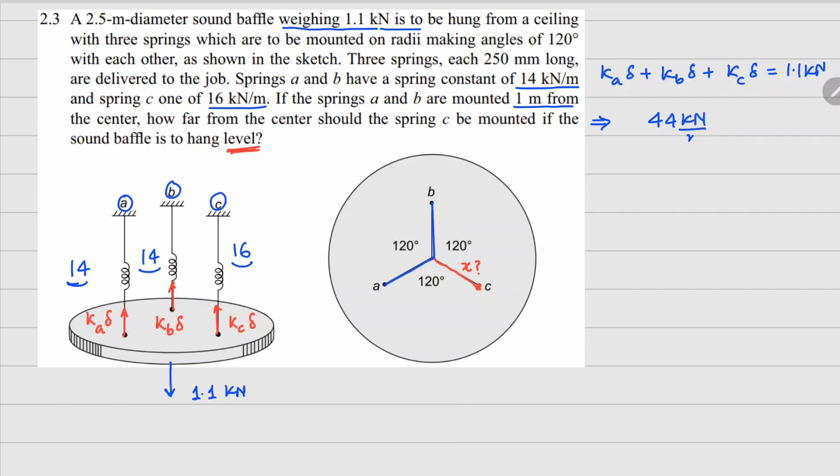And 1.1 kilonewtons on the other side. If I solve for this, delta comes out to be 25 millimeters. Now to find out the value of x, let's attach a coordinate system here.